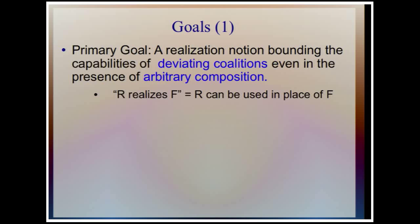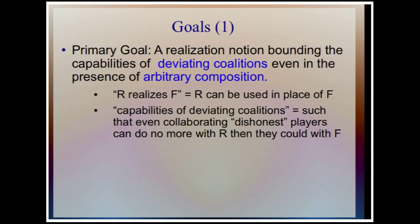What do we mean by a realization notion? If we have two functionalities R and F, R realizes F if there's a way to use R in place of F — there's some protocol in the R-hybrid world that realizes F. What do we mean by capabilities of deviating coalitions?